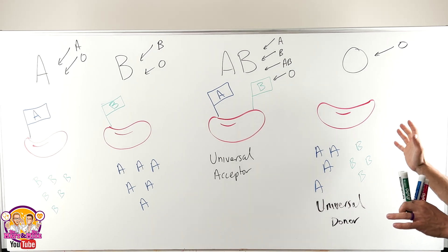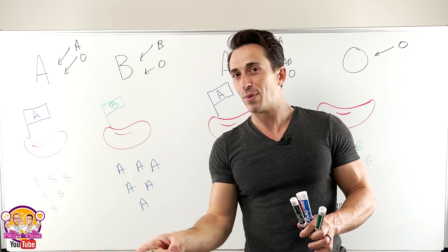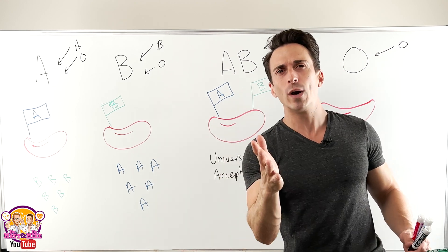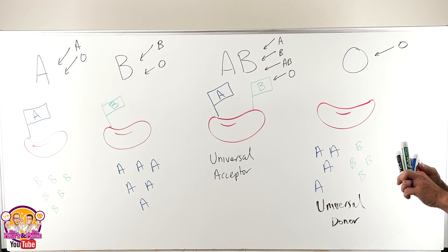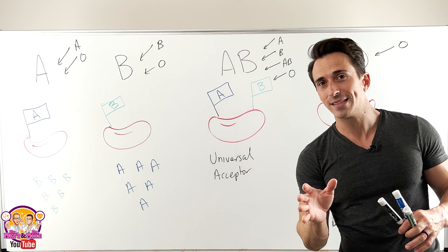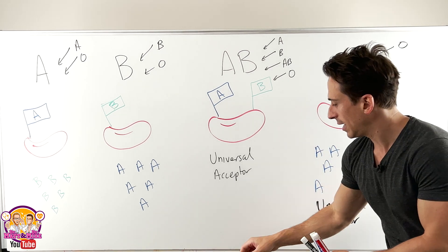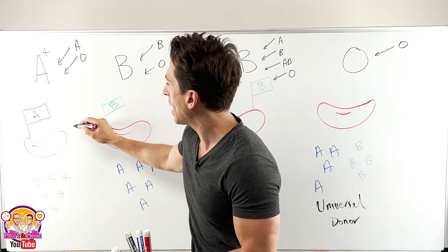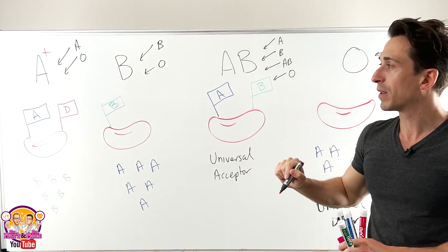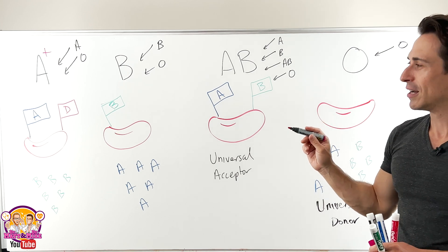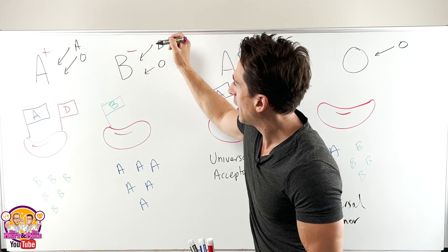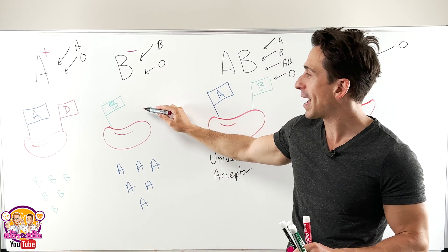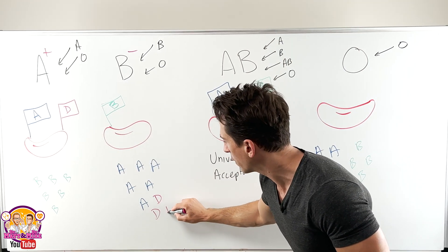There's another bit of complexity to add to this. You may be thinking: you're not just A or B or AB — you are A positive or A negative, or AB positive or AB negative. Where does this come from? This is another flag called the rhesus factor, named because it was first discovered in rhesus monkeys. The flag they wave is actually a D flag. So if somebody is A positive, it means they have the A flag but also the D flag, which is the rhesus factor flag. If somebody is B negative, they have the B flag but no D flag, and they will create antibodies against D.